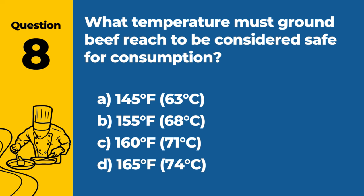Question 8: What temperature must ground beef reach to be considered safe for consumption? A. 145°F (63°C). B. 155°F (68°C). C. 160°F (71°C). D. 165°F (74°C). Answer: C. 160°F (71°C). Ground beef must reach an internal temperature of 160°F (71°C) to be considered safe for consumption, as this temperature is sufficient to kill harmful bacteria.